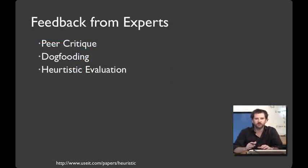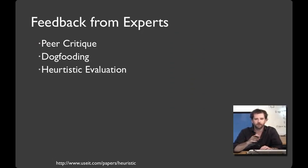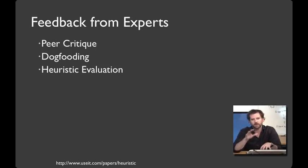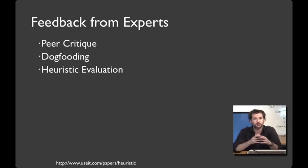Our third category of techniques is to get feedback from experts. For example, in this class we're going to do a bunch of peer critique for your weekly project assignments. In addition to having users try your interface, it can be important to eat your own dog food and use the tools that you build yourself. When getting feedback from experts, it can often be helpful to have some kind of structured format, much like the rubrics in your project assignments. One common approach to structured feedback on user interfaces is called heuristic evaluation — you'll learn how to do that in this class. It was pioneered by Jacob Nielsen.